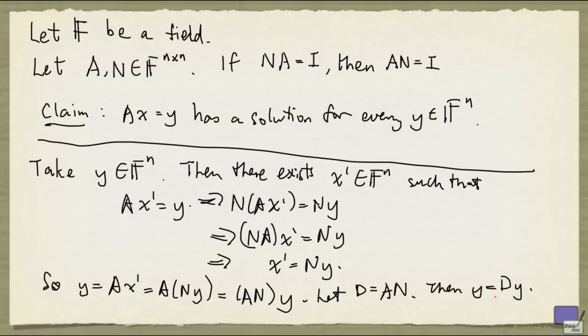But since y is arbitrary, it can be any n-tuple with entries in F. The only possibility that this can be true is when D is the identity matrix. And so A times N is the identity matrix, and that proves the result.